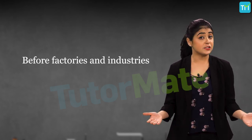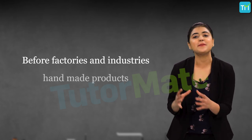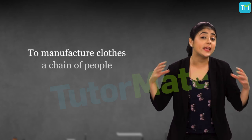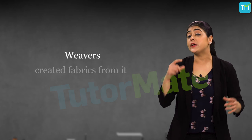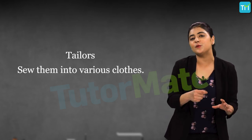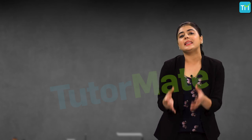Before factories and industries came into existence, there were individuals who created handmade products and sold them to various people. To manufacture clothes, the process involved a chain of people — farmers who grew cotton, people who spun the yarn from it, weavers who created fabrics from it, and tailors who then sewed them into various clothes. These clothes were then bought either by consumers or by merchants who would take them to other parts of the world to sell them.